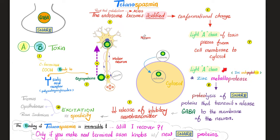Once the zinc metalloprotease degrades the SNARE proteins, I cannot release GABA into the synaptic cleft. When I cannot release the inhibitory neurotransmitter, the result is excitation — the inhibition of the inhibitor causes excitation. Too much spasticity all over: trismus in the jaw, the classic sardonic smile (risus sardonicus), and hyperextension of the back known as opisthotonos. This is why tetanospasmin is so toxic.